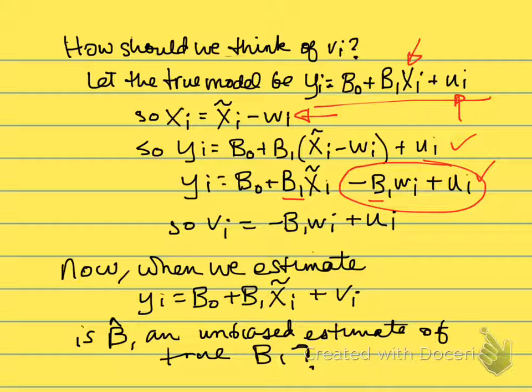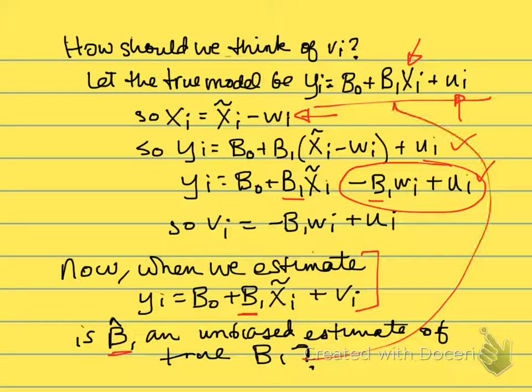When we go to estimate the equation with the mismeasured X, we can now ask: is this β̂₁ that we estimate, when we actually calculate it with ordinary least squares, going to be an unbiased estimate of the true β₁? The true β₁ would be the one that we would estimate, or the population relationship if X was measured correctly.